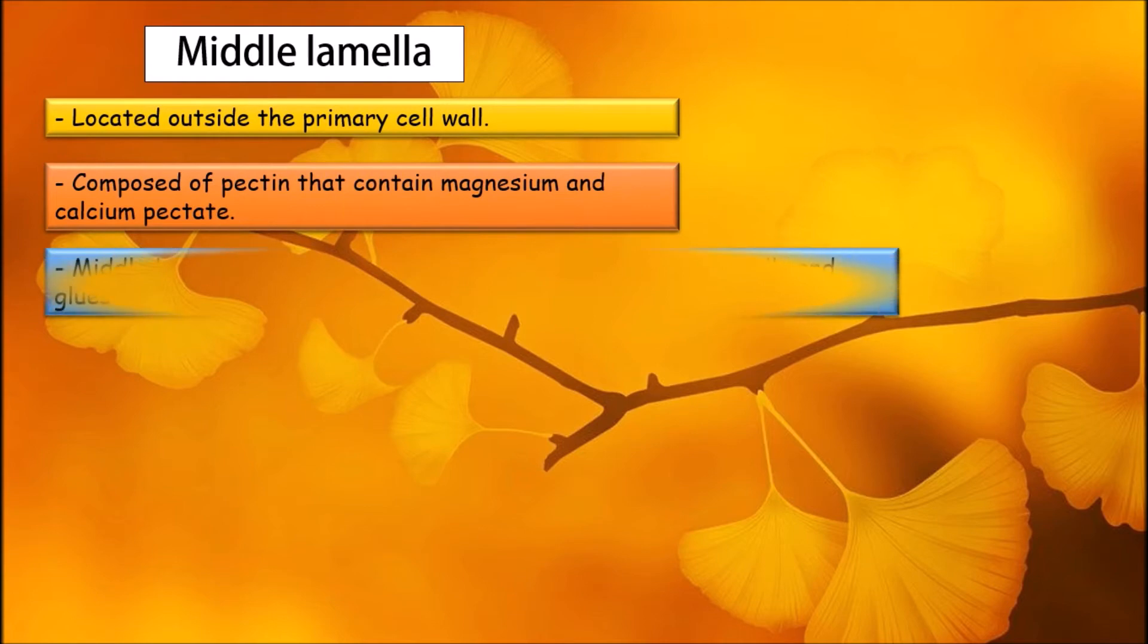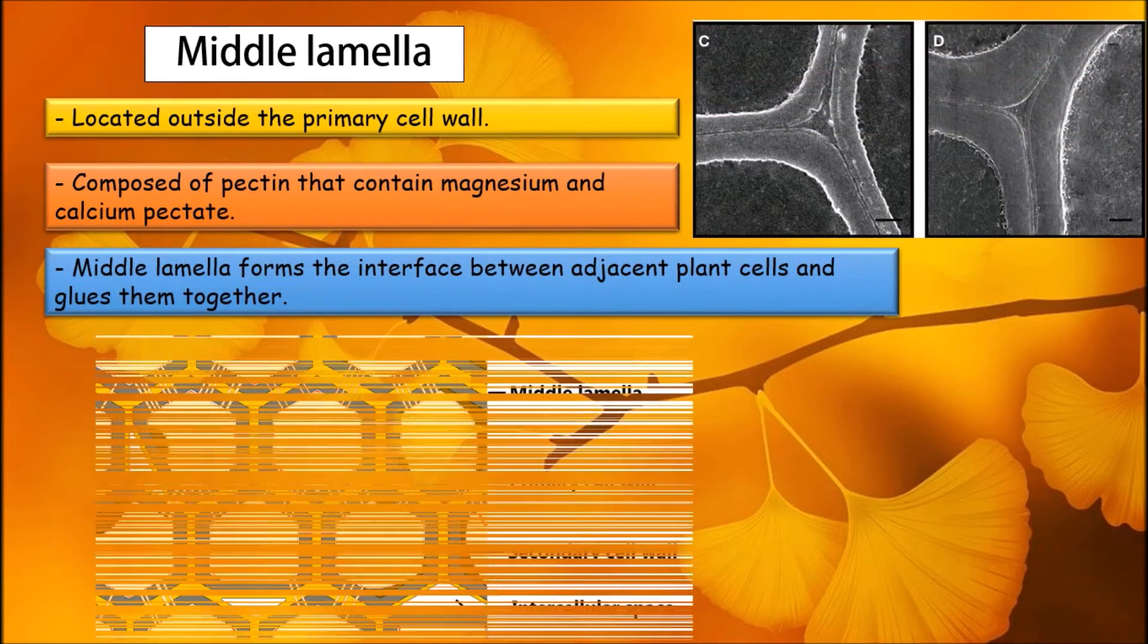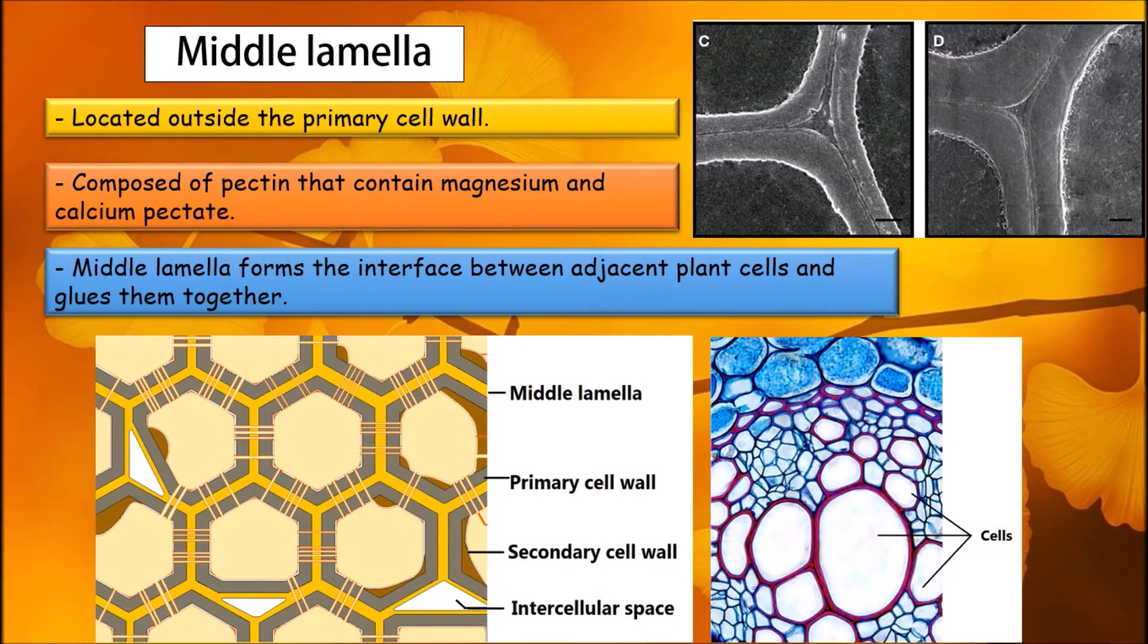They are sticky polysaccharides that consist of magnesium and calcium pectate. Middle lamella forms the interface between adjacent plant cells and glues them together.